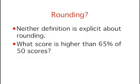Neither of these simple definitions is explicit about how to round off. For example, determining the 65th percentile of a set of 50 scores is problematic since 65% of 50 is 32.5. You could round off and define the 65th percentile as the lowest score greater than 32 of the scores, or you could define it as the lowest score greater than 33 scores.